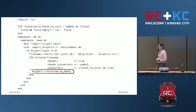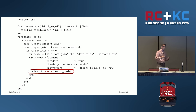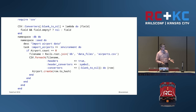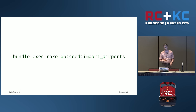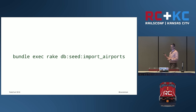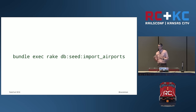Again, we could have done `first_or_create` here, but I don't want to do 8,000 lookups, wait for that to happen record by record, and generate all that log. To invoke that rake task: `bundle exec rake db:seed:import_airports`. It's in the `db:seed` namespace, so that becomes part of the name.